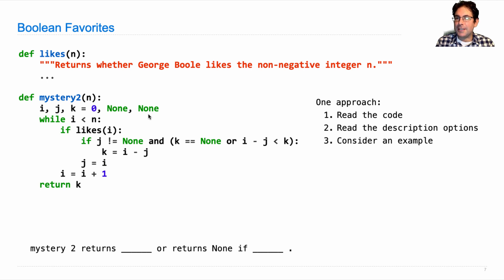It sets i, j, and k to zero, none, and none. While i is less than n, if George likes i then we do something complicated that changes k and j, and then no matter whether George likes i or not we add one to i. Oh and that's the condition of the while statement. So just by reading the code I've seen one thing which is that i will start at zero. It will work its way up to n and it will always increment. Always add one.